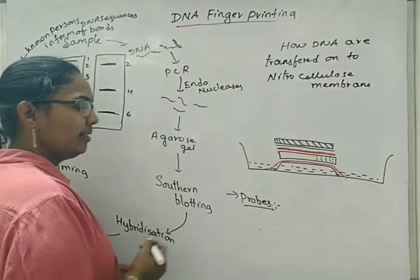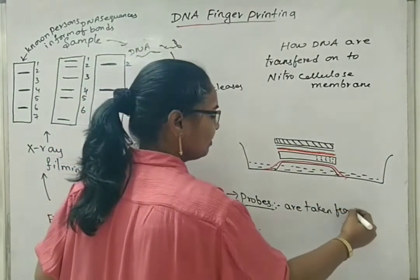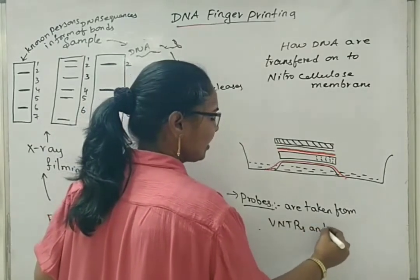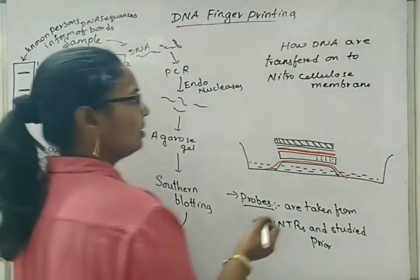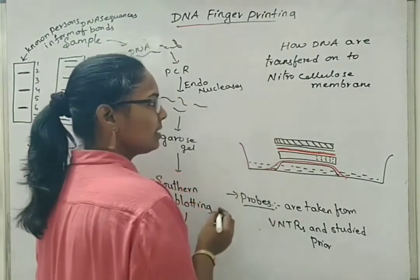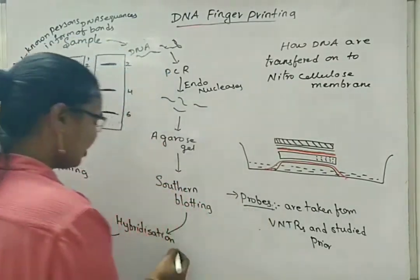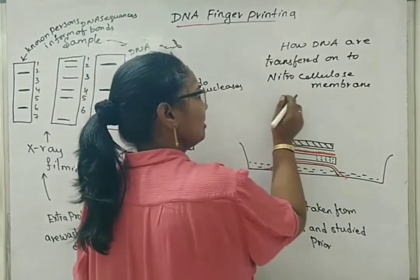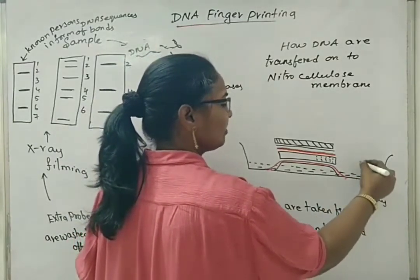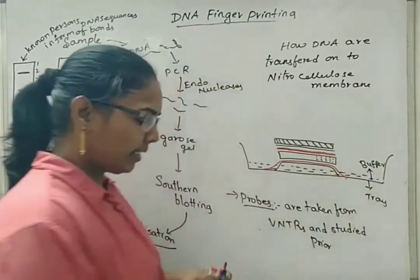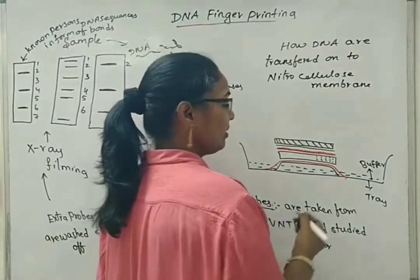The probes taken during hybridization are from VNTRs, studied prior, and their gene sequences are well known. The probes are added onto the nitrocellulose paper for complementarity with the DNA. This method after hybridization is called southern blotting — we can see here how the DNA gets transferred onto the nitrocellulose paper.